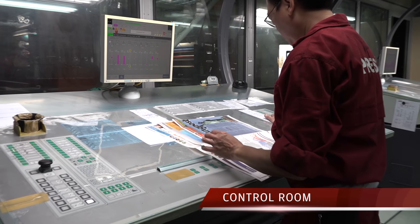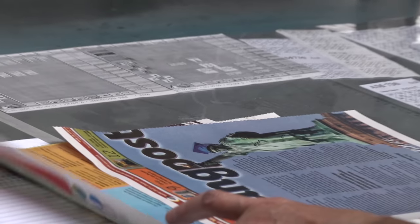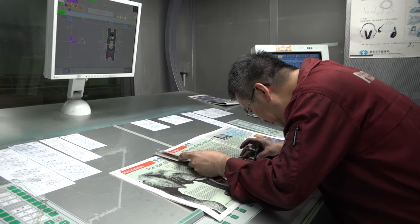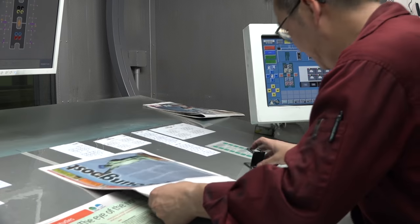Press operators run the press from the control room, also known as the quiet room, where they check color and registration. From this room they can make fine adjustments to the printer.